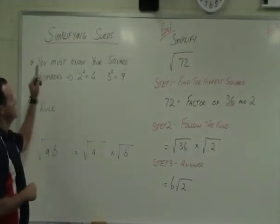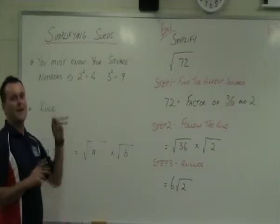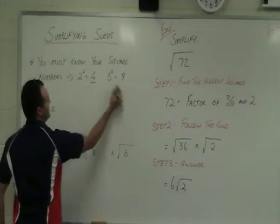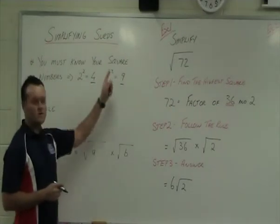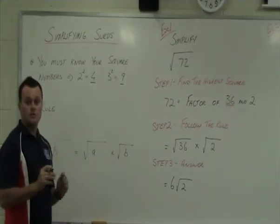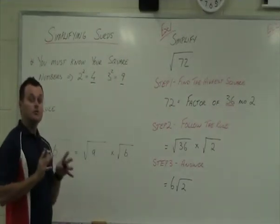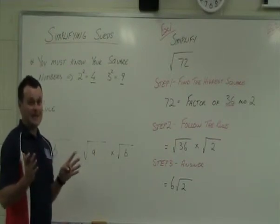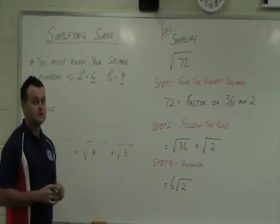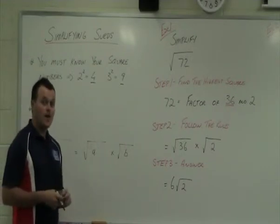Number one thing you need to know is you must know your square numbers. So these are the square numbers here, 4 and 9, because 2 squared is 4, 3 squared is 9, so 4 and 9 are the square numbers. You should really be writing all those ones down at least up to 10 squared so you know what all those numbers are. So you're looking for squared numbers.